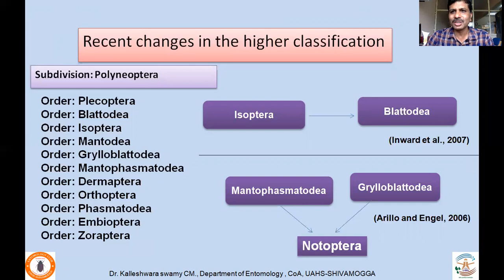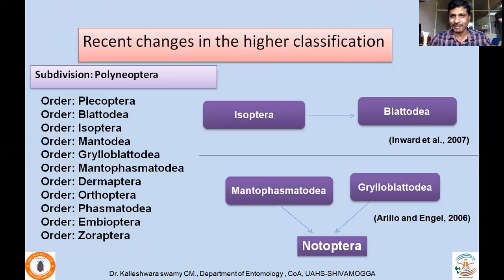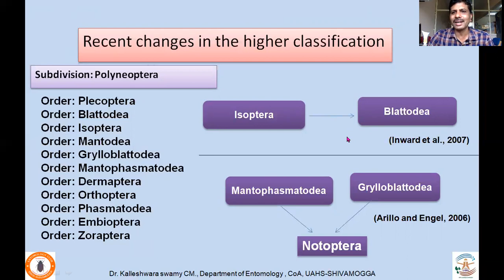Followed by the Christiansen classification, a lot of changes took place. One important thing to understand is that classification is dynamic. Once the taxonomist's understanding towards insects improves, the freedom is given to taxonomists — you can consider two different orders into a single order or differentiate a particular order into two different orders. That is the freedom which the ICZN provides. As a result, the classification keeps on changing. Two important recent changes are: first, Isoptera is no more considered as a separate order — it was merged under the order Blattodea, because termites are phylogenetically considered very close to cockroaches. As a result, Isoptera lost the status of order.